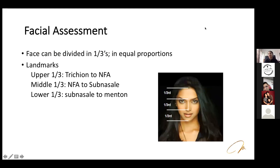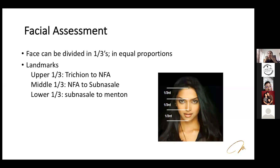For facial assessment, the face is divided into equal thirds: upper third from the hairline (trichion) to the nasofrontal angle; middle third from the nasofrontal angle to the subnasale; and lower third from the subnasale to the menton (chin). These three should be equal in proportion. With age, dentists know the lower third decreases due to loss of vertical dimension — this can be restored through full mouth rehabilitation.